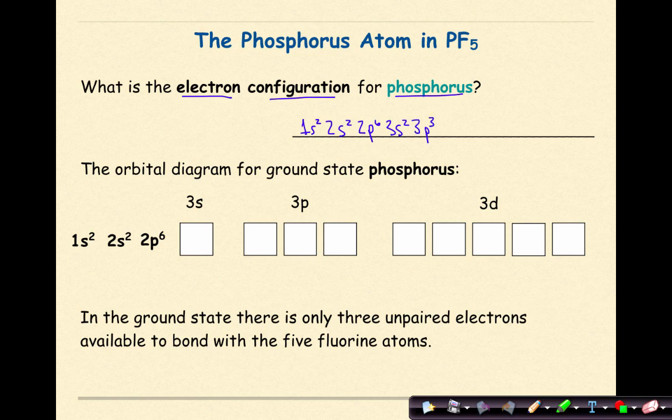The orbital diagram for ground state phosphorus will be as follows. We assume the 1S2, the 2S2, and the 2P6. Those are going to be completely filled. Then as we go into the third period, we'll have 3S2, and then an electron in each one of the orbitals in the P-sub-level. In the ground state,